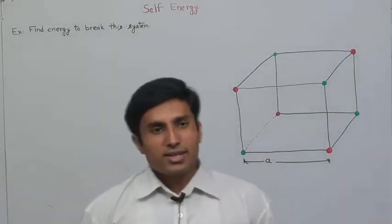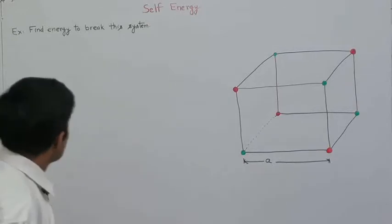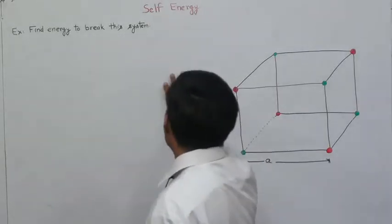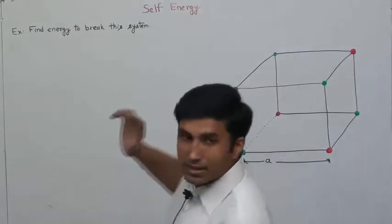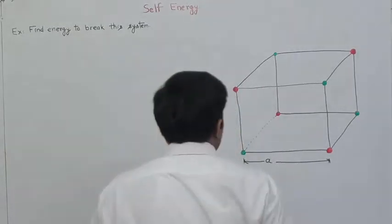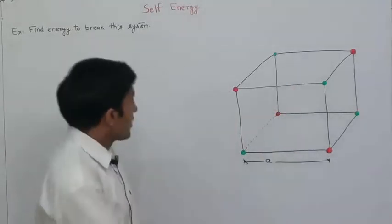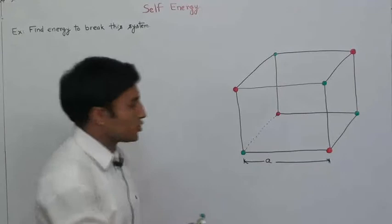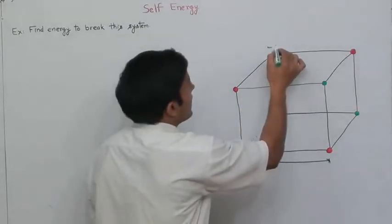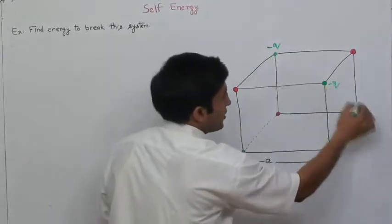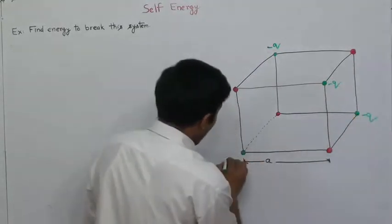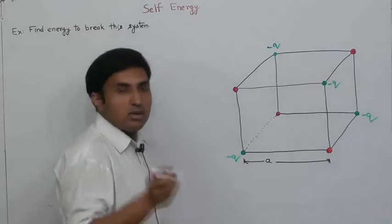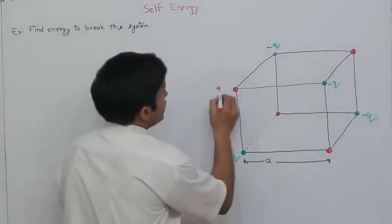Hello students, let's take the example. In this diagram, green dots represent charge minus q. All dots are identical and have charge minus q each, and all red dots have charge plus q each.